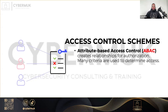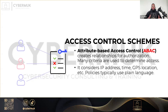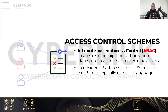Attribute-based access control, or ABAC, creates a relationship for authorization using many criteria to determine access. It considers things like IP address and GPS location — if access is only granted to users in the United States and your IP shows you're in France, you won't be granted access. It also considers time of day: if access is only granted between 8 a.m. and 9 p.m. and you try to connect at 1 a.m., access is denied. ABAC considers multiple attributes simultaneously.